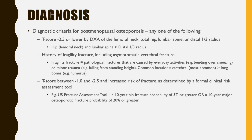Another way of diagnosing osteoporosis is if there's a T-score between minus 1.0 and minus 2.5, which would be classified as osteopenia, and the patient is at increased risk of fracture as determined by a formal clinical risk assessment tool, which we'll talk about on the next slide.